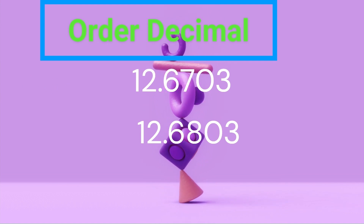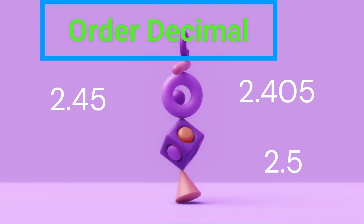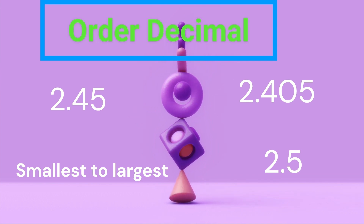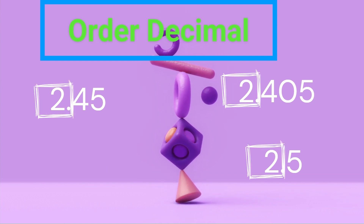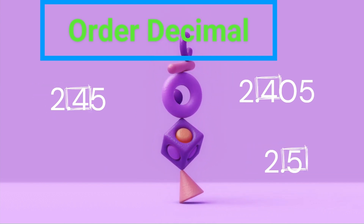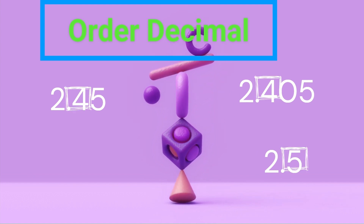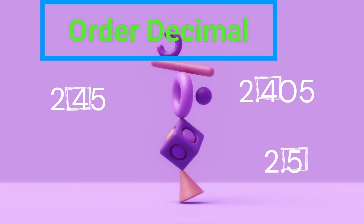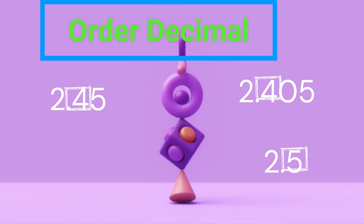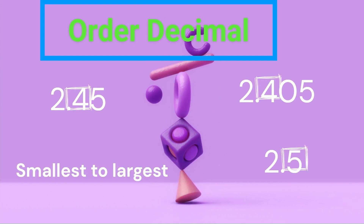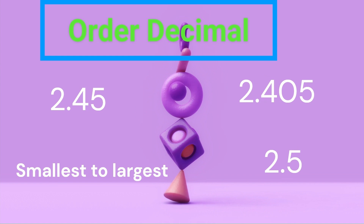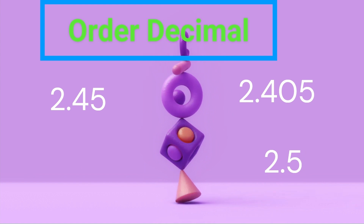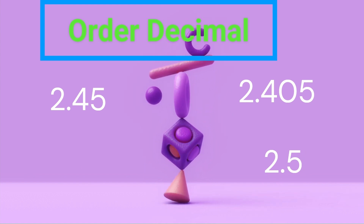Let's compare and order the decimals 2.45, 2.5, and 2.405 from smallest to largest. Step 1: Look at the whole numbers. Each number has a whole number of 2, so we move on to the tenths place. Step 2: Compare the tenths digits. 2.45 has a tenths digit of 4. 2.5 has a tenths digit of 5. 2.405 has a tenths digit of 4. Since 2.5 has the highest tenths digit, it is the largest of the three numbers. Since 2.45 and 2.405 both have the same tenths digit, we move on to compare the hundredths place.